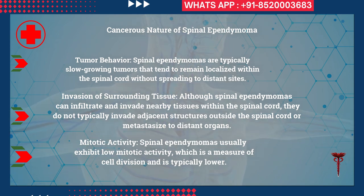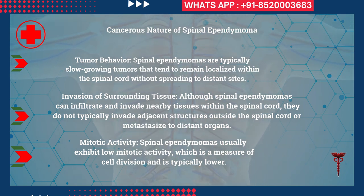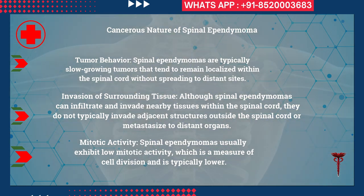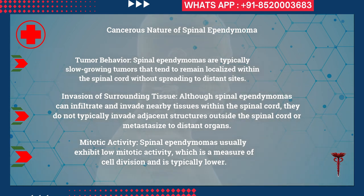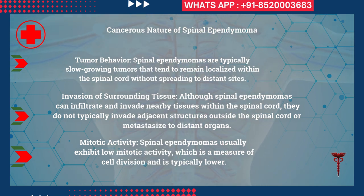Spinal ependymomas tend to remain localized within the spinal cord without spreading to distant sites. They can infiltrate and invade nearby tissues within the spinal cord, but do not typically invade structures outside the spinal cord and do not spread to distant organs. They usually exhibit low mitotic activity — that is, cell division is typically low in the majority of spinal cord ependymomas.